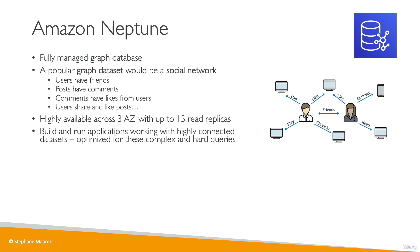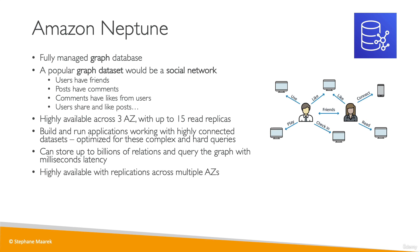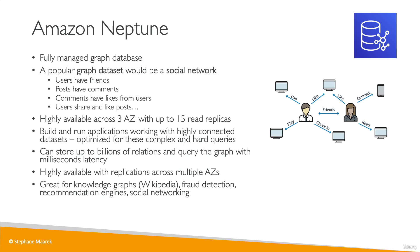Neptune is optimized to run complex queries on top of graph datasets. You can store up to billions of relations in the database and query the graph with milliseconds latency. It's highly available across multiple availability zones, and it's great for storing knowledge graphs — for example, Wikipedia, where all articles are interconnected. Use cases include fraud detection, recommendations engines, and social networking.